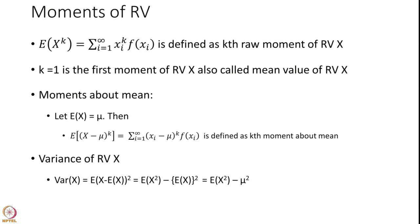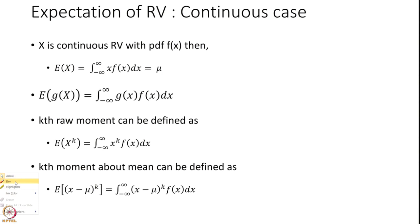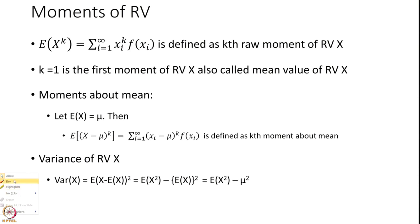Let us talk about moments. The expected value of x to the power k — which is also a function of the random variable — equals the summation of x_i to the power k times f(x_i), and this is defined as the k-th raw moment of random variable X. Please remember we are going to have two kinds of moments: the raw moment, and the moment about the mean.